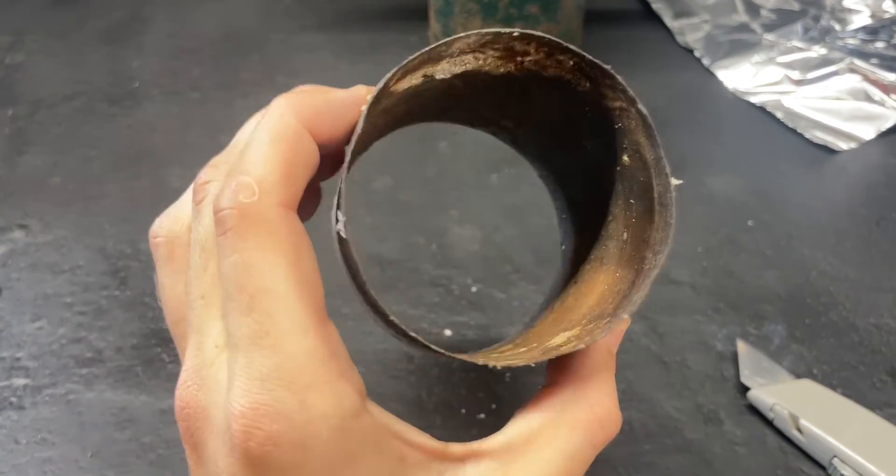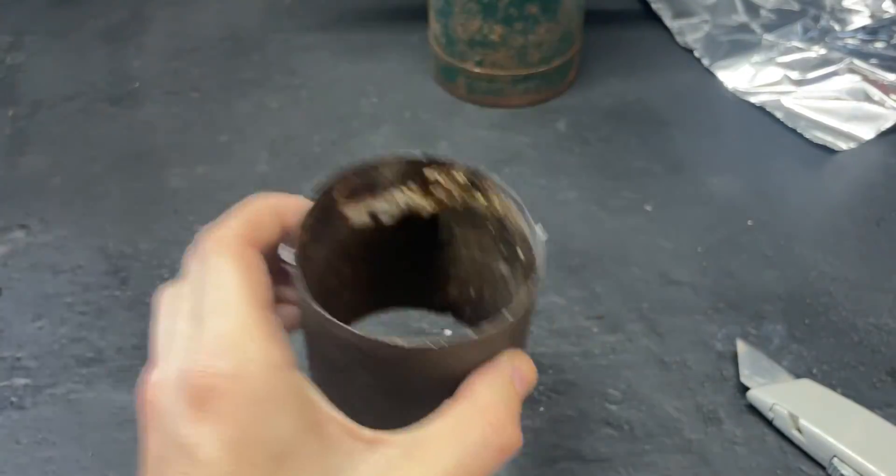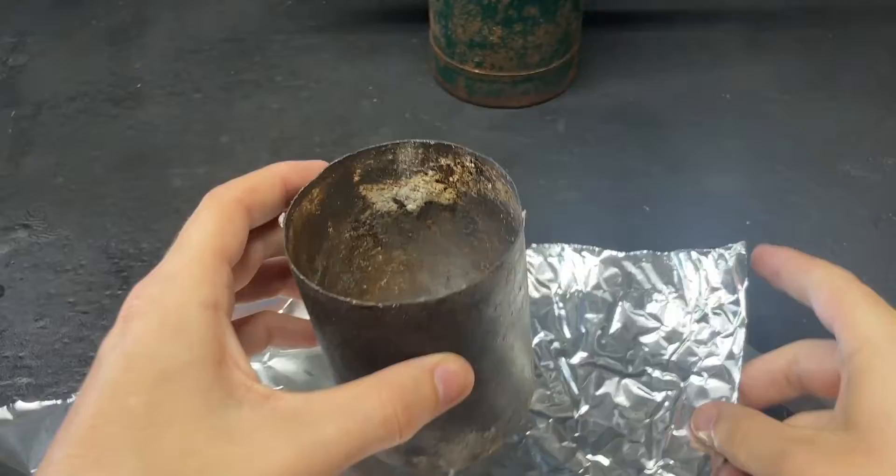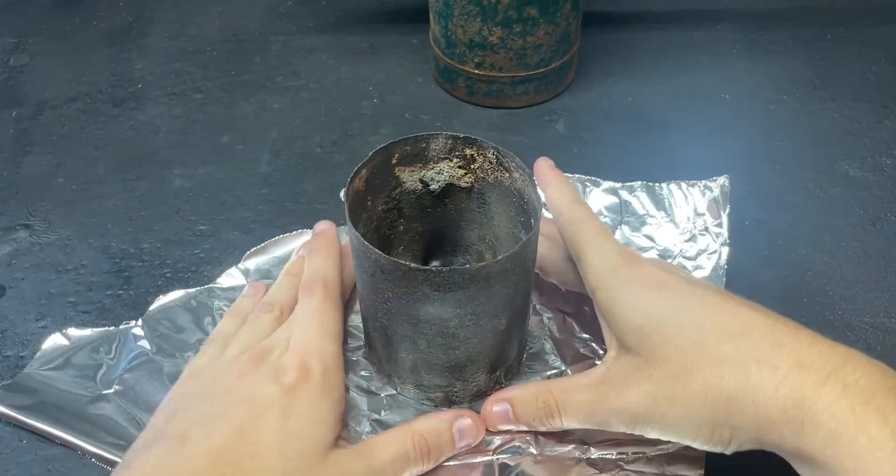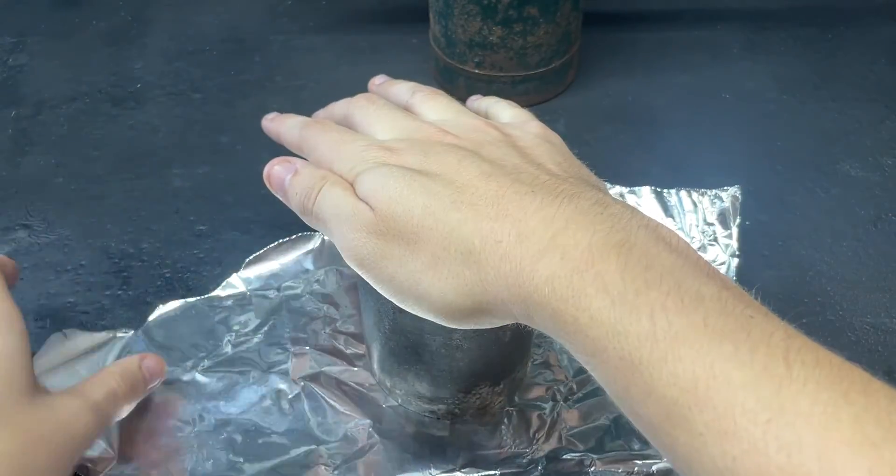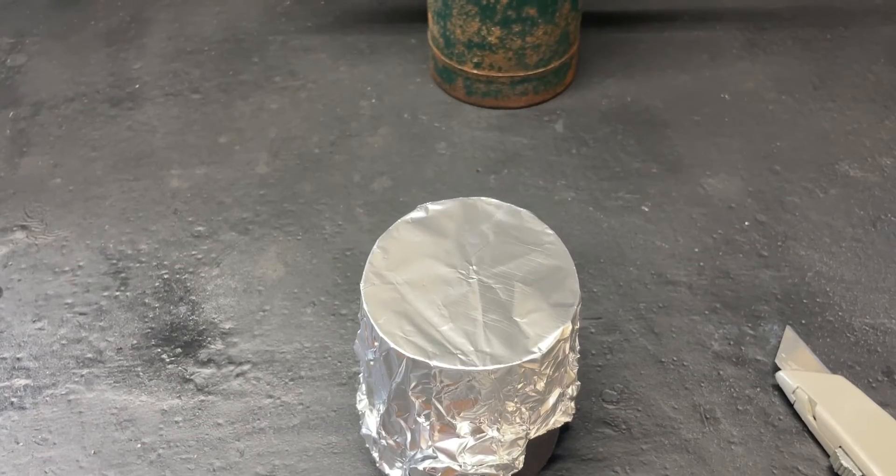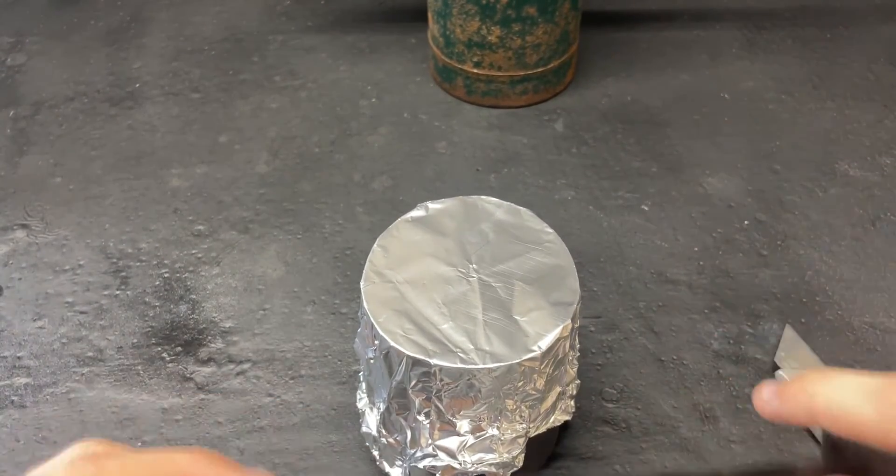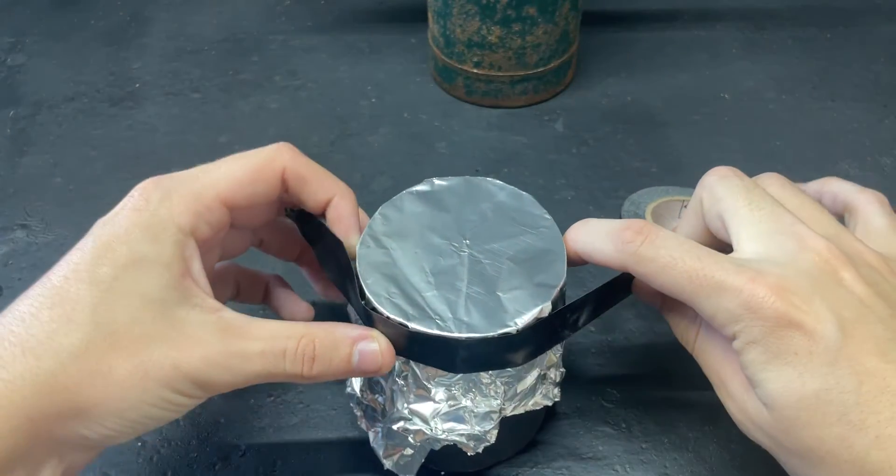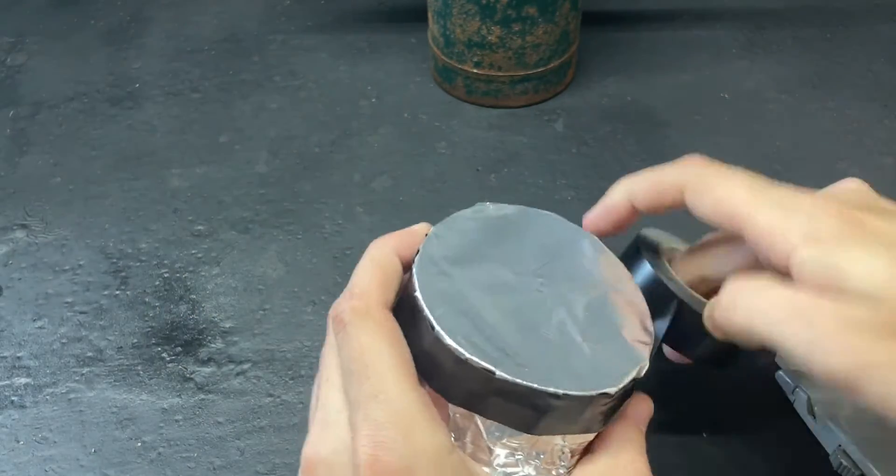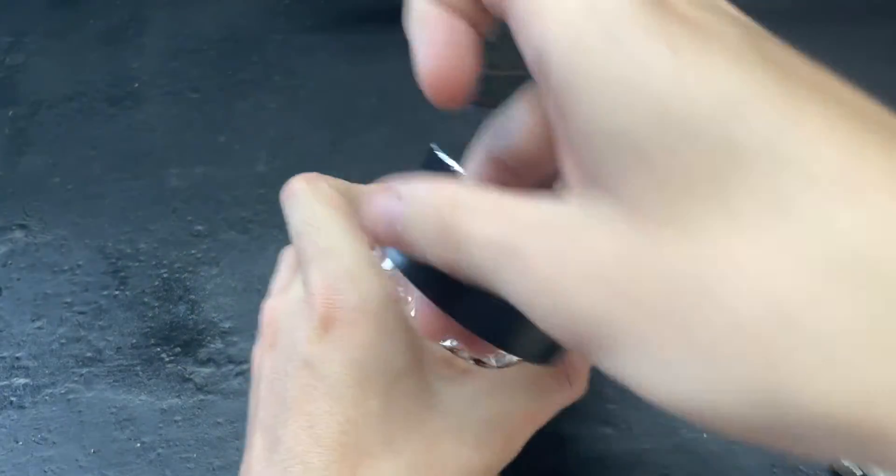So next I'm going to take the stainless steel cylinder. This is from an old thermos and I'm going to seal off one end with aluminum foil, just by placing it flat and wrapping it up and around. To keep the aluminum foil steady on one side, I'm just going to wrap it up with some electrical tape and this will just keep the aluminum foil in place.